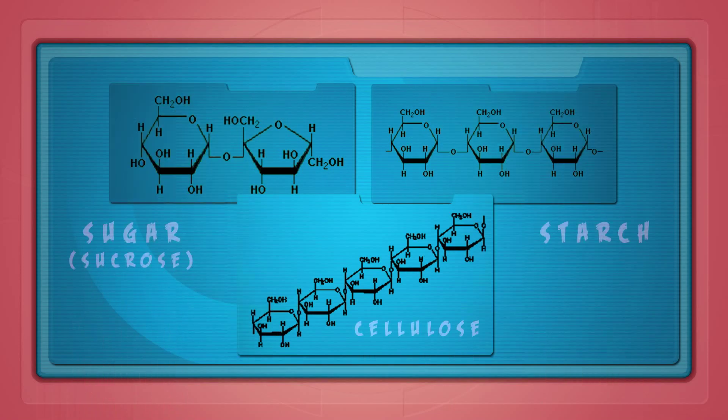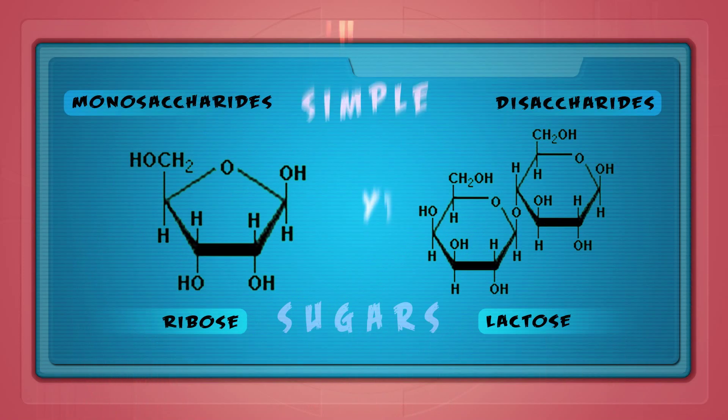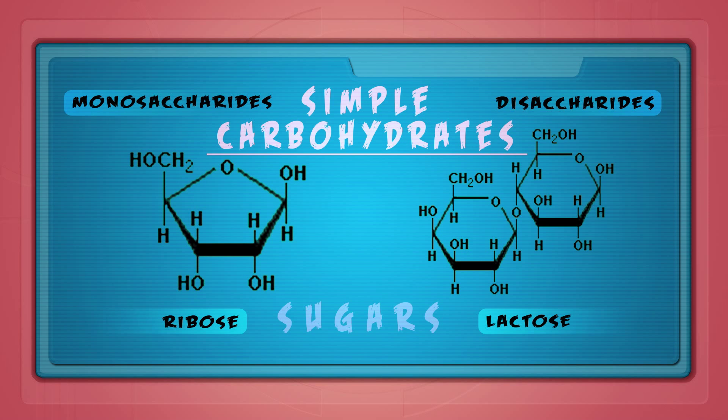Sugars, starches, and cellulose are carbohydrates. Sugar molecules are the simplest type of carbohydrates. These sugars can be made of one or two units, otherwise known as monosaccharides or disaccharides.